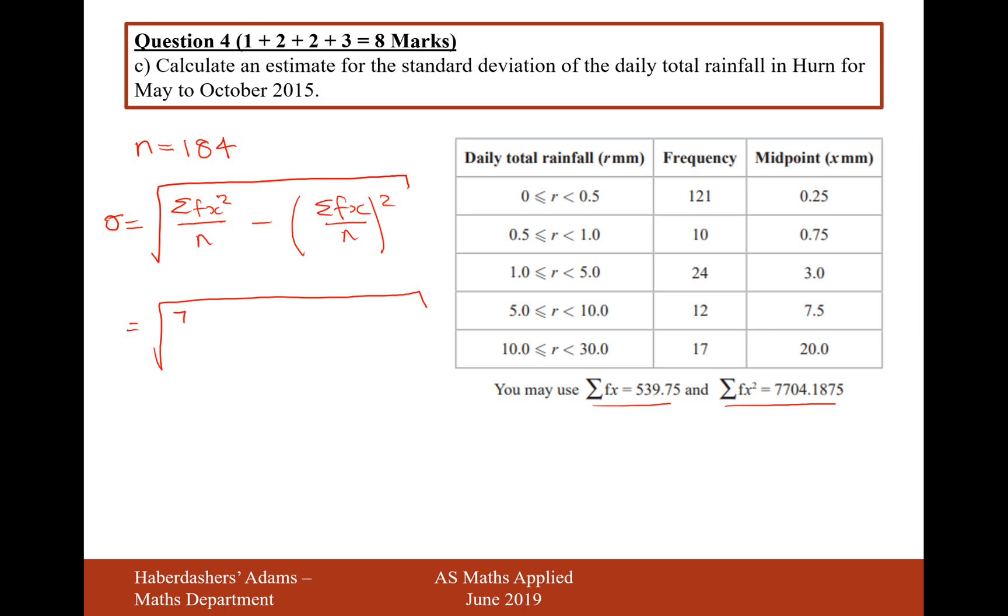It's going to be 7704.1875 over n, which is 184, minus, and then it's going to be 539.75 over 184, and all that's going to be squared. And we put that all into our calculator all in one go, and it gives us an answer of 5.77 millimeters of rain. That's the standard deviation. That's the average change in rainfall from the mean for all of our data.